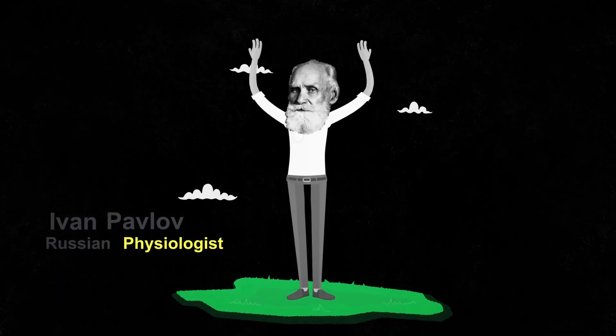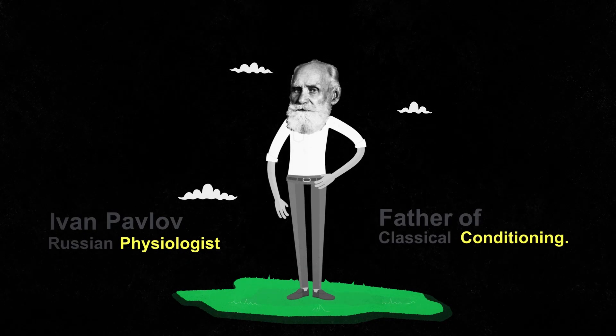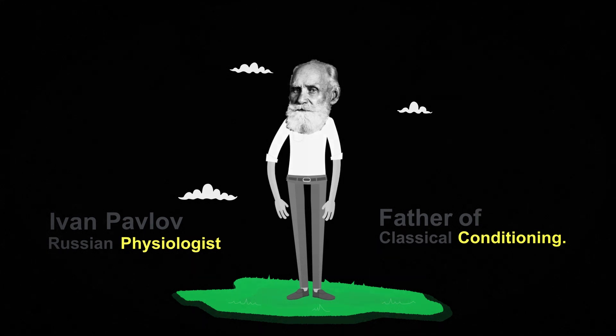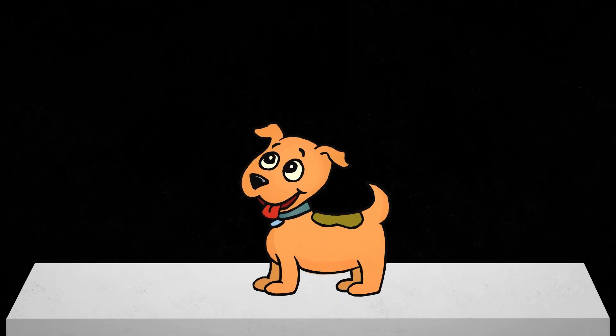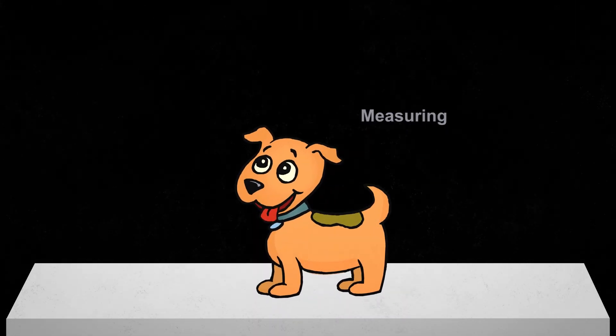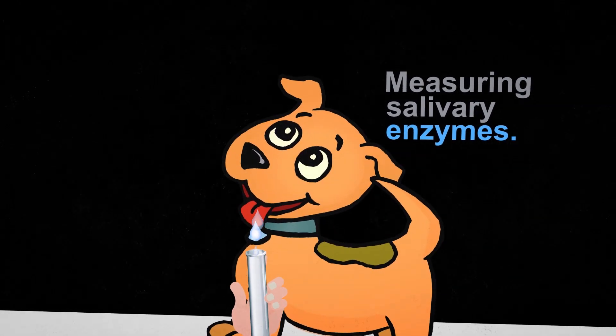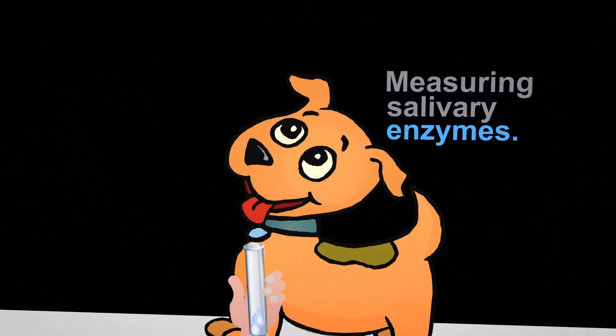Pavlov was one of the early scientists that really began to break ground on the concept of classical conditioning. In his experiments, he took a dog and strapped it to a table. He was really interested in measuring salivary enzymes - that's where his studies were.